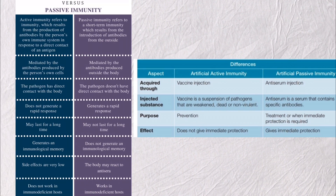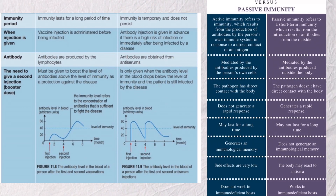The fourth aspect is effect — active immunity will not give immediate protection, while passive immunity will give immediate protection. The fifth aspect is immunity period — active immunity lasts for a long period of time, while passive immunity is temporary and does not persist.